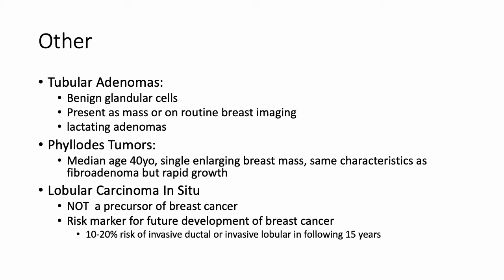In the other category are tubular adenomas — benign glandular cells with minimal stromal elements that may be seen as a breast mass or on routine breast imaging. Lactating adenomas can be seen during pregnancy or postpartum and would present as a palpable mass requiring biopsy for diagnosis. Phylloides tumors are the most uncommon fibroepithelial tumor we'll commonly see on questions, representing only 0.3 to 0.5% of all breast tumors.